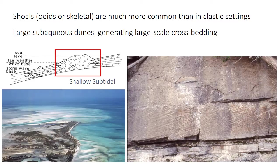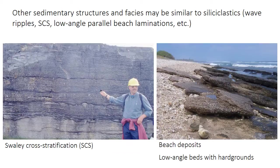Shoals are not common on clastic coasts, but they are much more common and widespread in carbonate environments. Because these shoals are large dunes, they generate large-scale crossbedding. In the picture on the right, the scale bar shows that these crossbeds are around 60 centimeters thick — very large dunes made of carbonate packstone or grainstone.